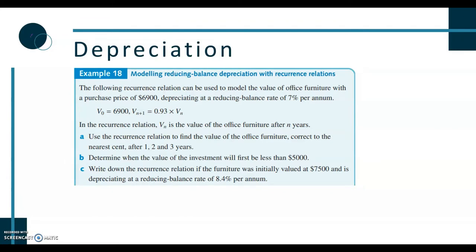The first example is looking at modeling some reducing balance depreciation. We're told the recurrence relation models the value of office furniture with a purchase price of $6,900 and a reducing balance rate of 7% per annum. The 0.93 comes from r = 1 − 7/100, which gives us 0.93.